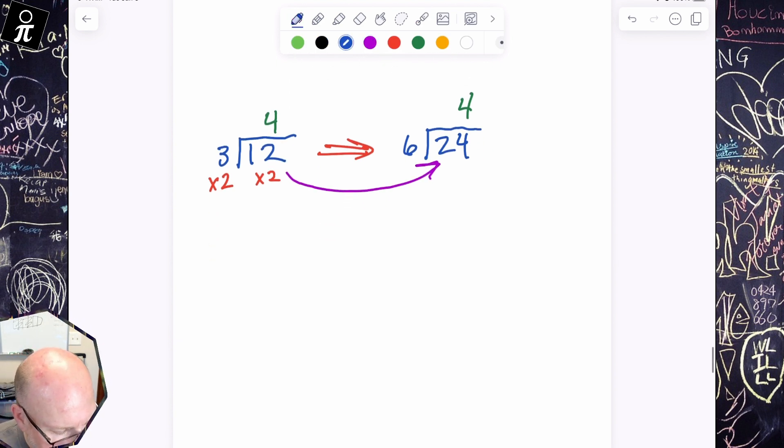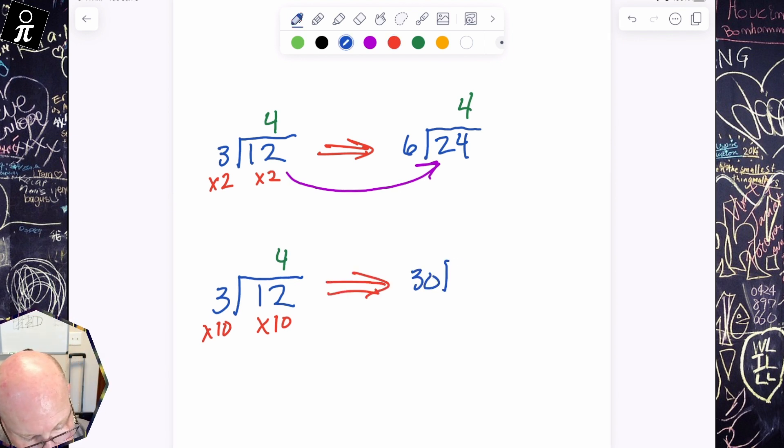In fact, it turns out we can multiply both of those numbers by anything we want and we'll still get the exact same answer. For example, we know that 3 into 12 is 4. And if we want to multiply both of these guys by 10, yes, we're going to get a brand new problem. We're going to get 30 into 120. But surprisingly, kind of blows my mind here, we get the exact same answer. It's 4. 30 goes into 120 four times. 30, 60, 90, 120. There's our 4.